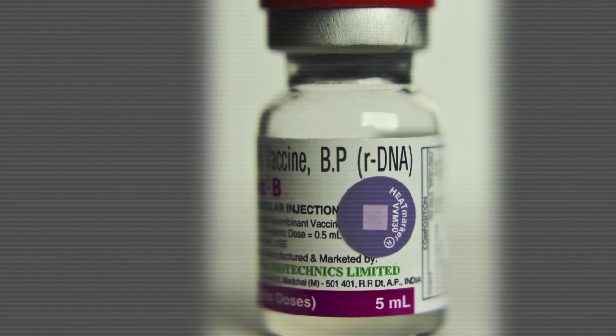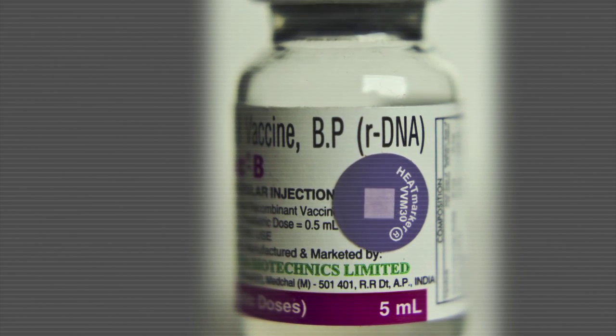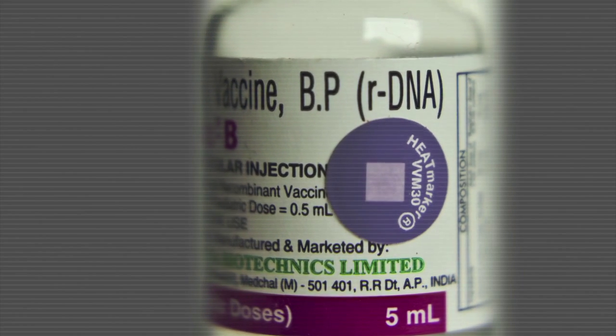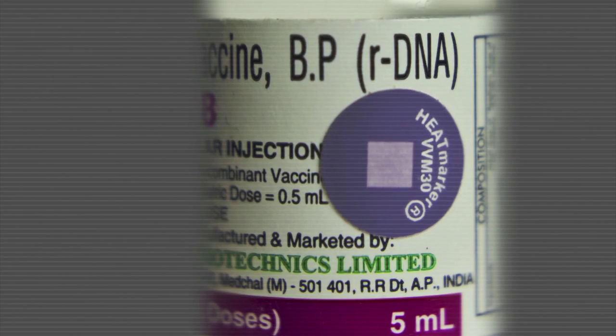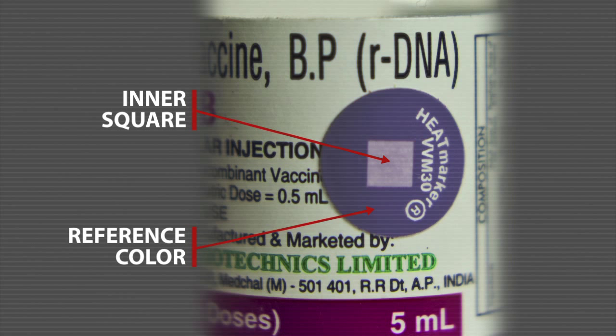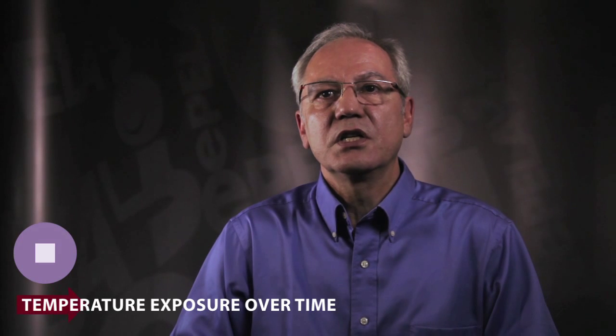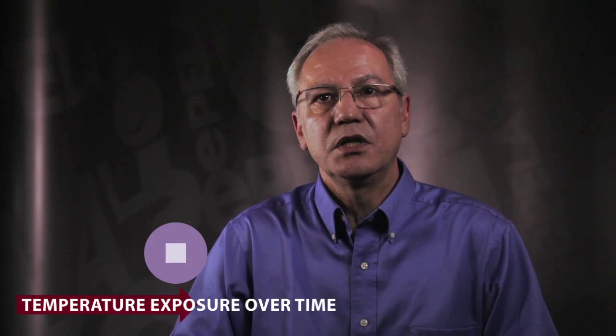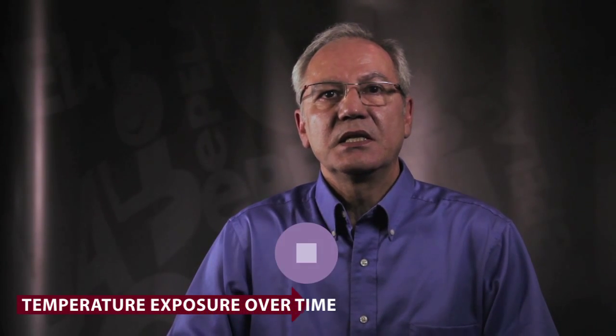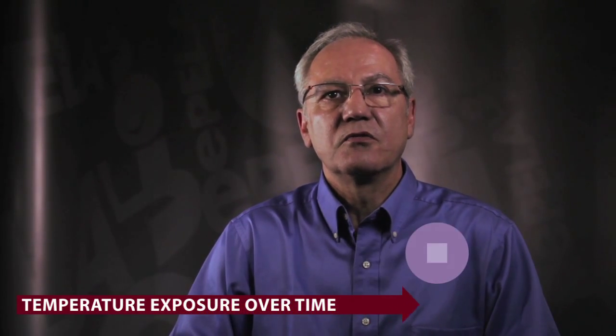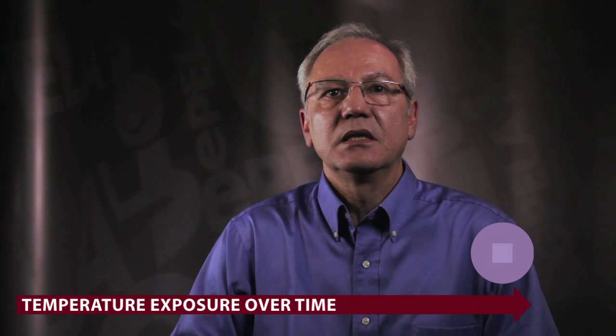As I explained earlier, the VVM is an indicator that will show the cumulative heat exposure of a vial of vaccine. This will be indicated by a change of colour in the inner square. The colour of the circle does not change and is called the reference colour. The colour change inside the square is continuous. As time passes, it becomes gradually darker and darker.